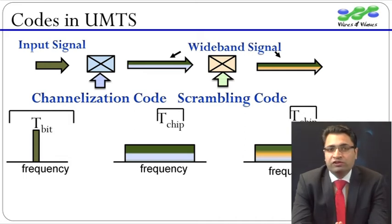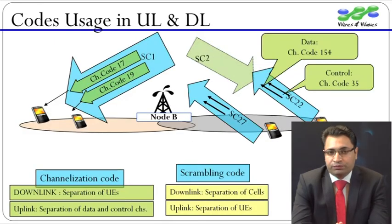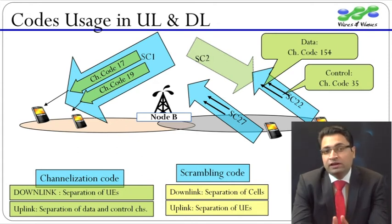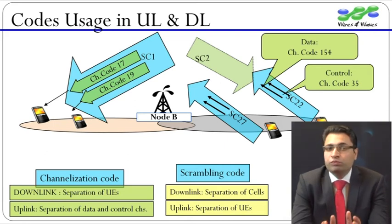Scrambling code does not cause any change to the bit duration or bandwidth. It simply superimposes the transmitter's identity on the already spread signal. Let us consider a Node B with two sectors. In this figure, all the downlink signals in the left cell are scrambled with scrambling code 1, and in the right cell with scrambling code 2. This implies that in downlink, scrambling codes are used to identify the cell. The downlink scrambling code of a cell is similar to BCCH ID of 2G and PCI of LTE.